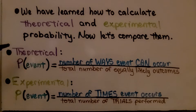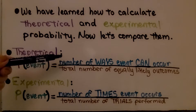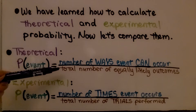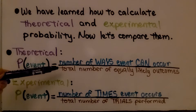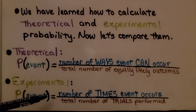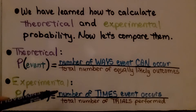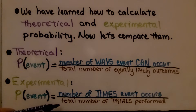For theoretical probability, the probability of an event is the ratio of the number of ways the event can occur to the total number of equally likely outcomes. For experimental probability, the probability of an event is equal to the ratio of the number of times the event occurs to the total number of trials performed.